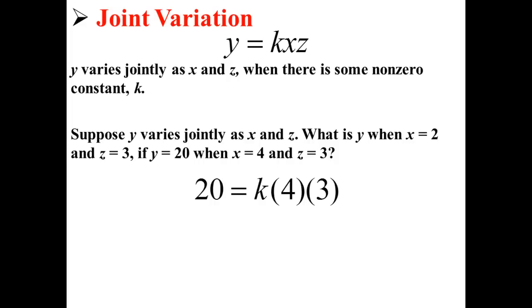Here we know what y, x, and z are and we want to solve for k. So we have 20 is equal to k times 4 times 3. 12k is equal to 20 and when we divide by 12 we find that k is equal to 5 over 3.